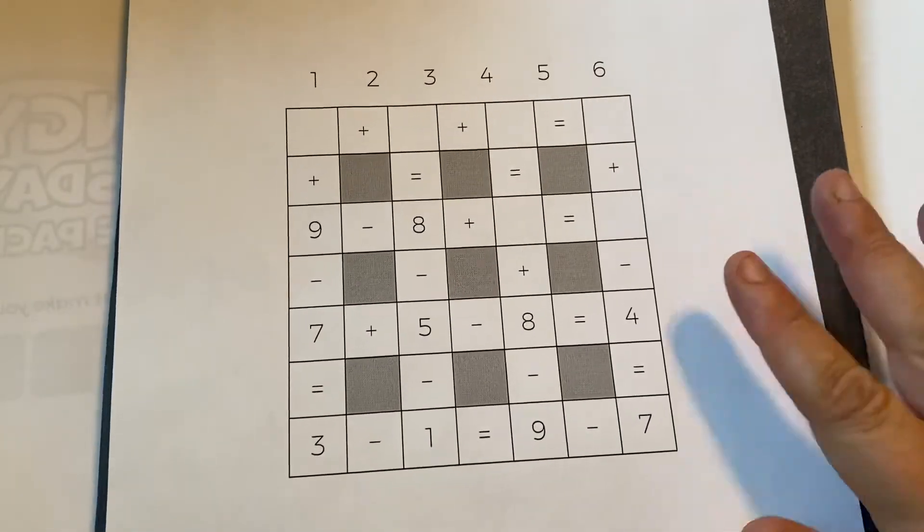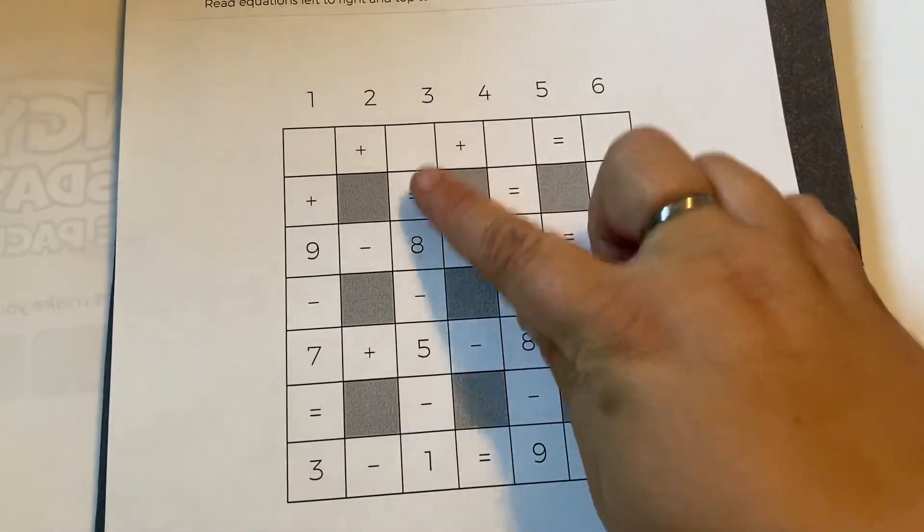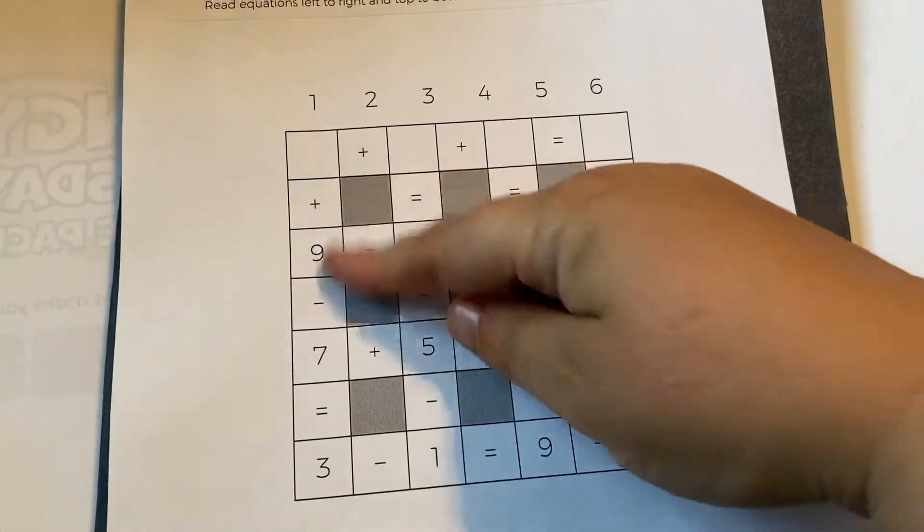And for me it's hard to start here where there's so many blanks, so I like to start where there's only one blank. So I'm going to go up and down first.